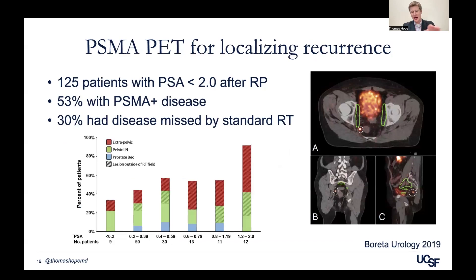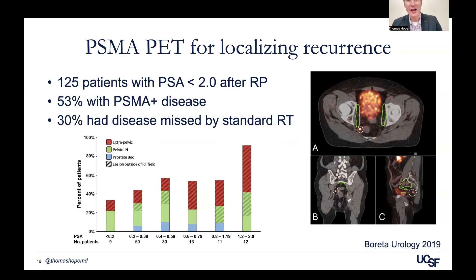Additionally, in the setting of biochemical recurrence after definitive therapy, also from our radiation oncology group, as PSA goes up, we see disease in more and more patients. Most importantly, in patients with PSA less than two after radical prostatectomy, 30% had disease that was missed with standard radiation therapy — really highlighting that we're missing disease because we can't see it. The literature shows about 30% biochemical recurrence rate after salvage radiation therapy, and we're recurring because we were never treating the entirety of the disease.